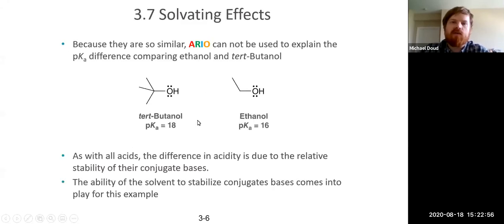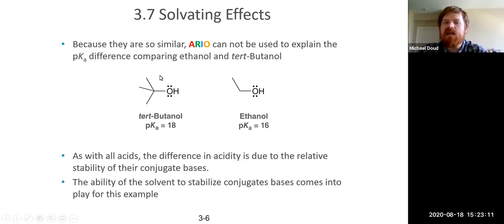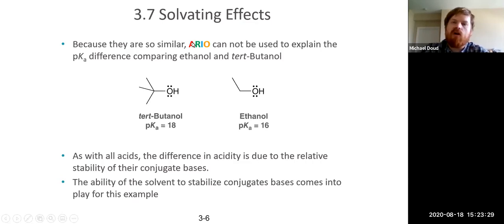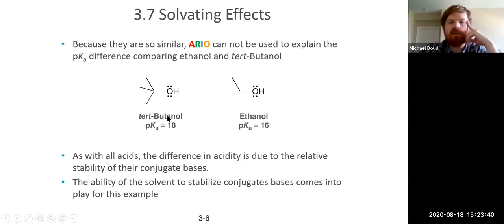Just a couple of last points from this chapter. We have solvating effects. REO works well when we have two protons on very different molecules, but sometimes we can't explain things using just the REO method. For example, consider t-butanol and ethanol. Looking at their pKa values — 18 for t-butanol and 16 for ethanol — this difference cannot be explained by REO, since both protons are on the same atom, they have the same resonance, the same inductive effects, and the same orbital. REO predicts they should have essentially the same pKa.